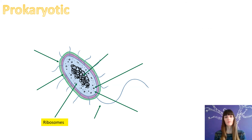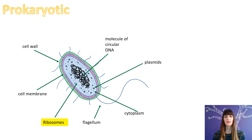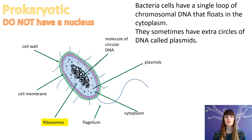Let's go through the answers. Remember that it's a prokaryotic cell, which means it does not have a nucleus. Our first label is a cell wall — now a plant cell also has a cell wall, but that does not mean a bacteria cell is a plant cell. It has a cell membrane, just like our other two cells. A flagellum, which is a tail-like structure, helps it to swim about. It also has cytoplasm, but it doesn't have a nucleus — so instead it has plasmids and a circle of DNA. Bacteria cells have a single loop of chromosomal DNA that floats in the cytoplasm, and they sometimes have extra circles of DNA which we call plasmids.